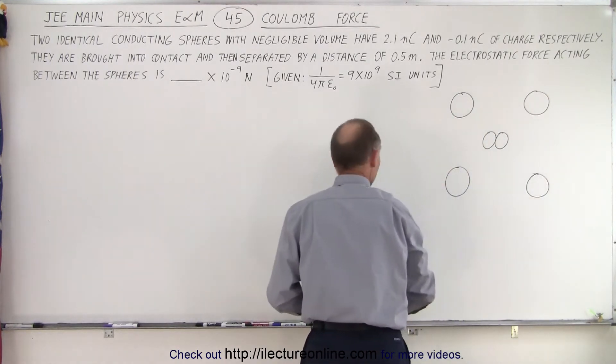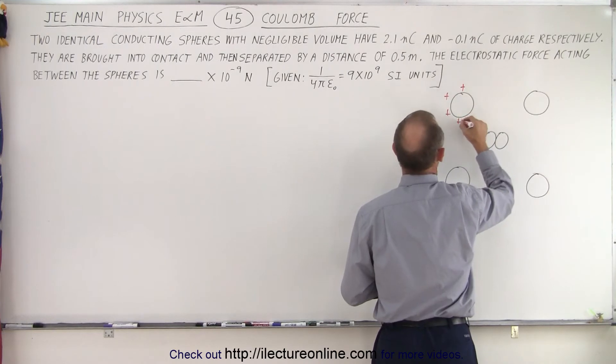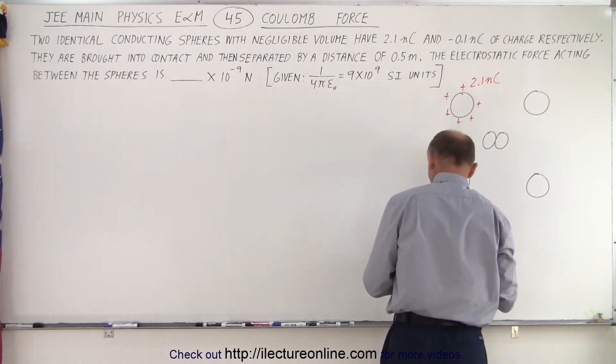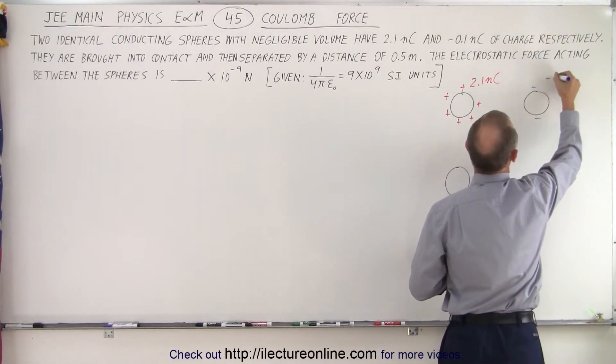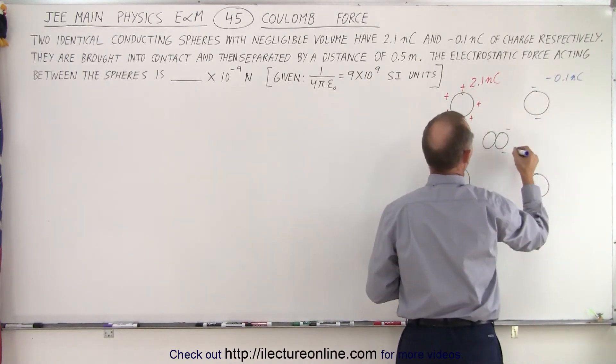At this point we have one that has some positive charge on it, 2.1 nanocoulombs, and then the other one has a little bit of negative charge on it, minus 0.1 nanocoulombs. So they're now placed together.